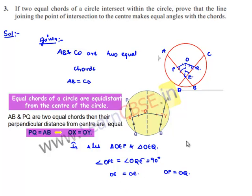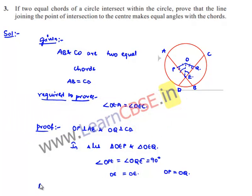Therefore, by RHS property of congruency, since it is a right angle triangle, we can say both the triangles are congruent. Therefore, triangle OEP is congruent to triangle OEQ.